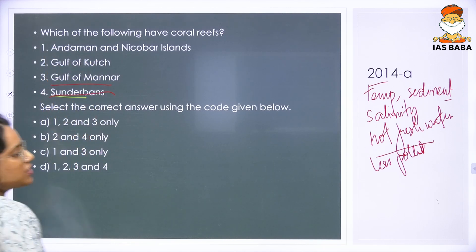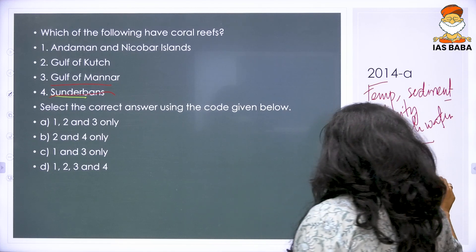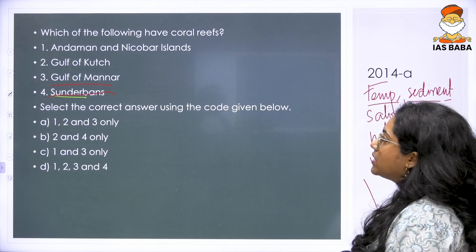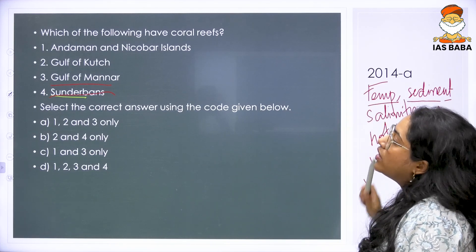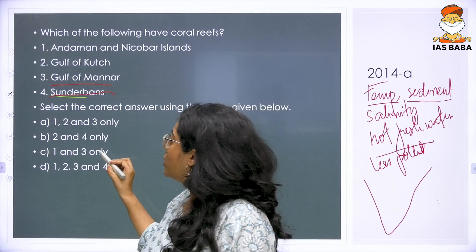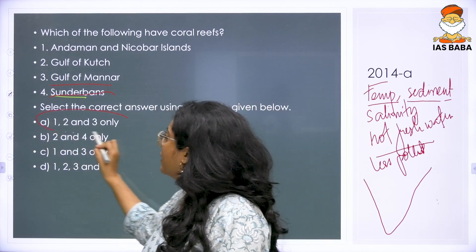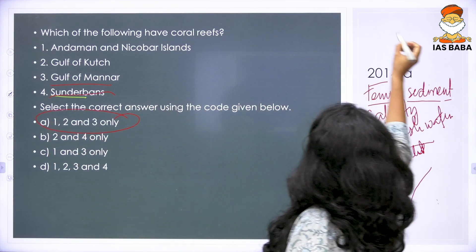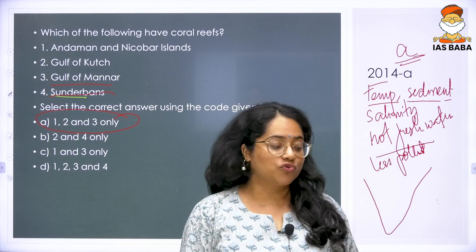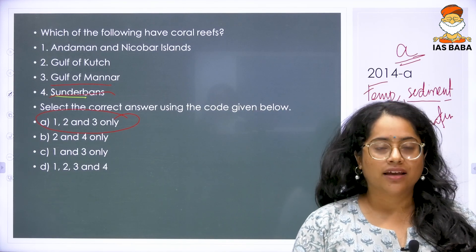In all of these areas, they all occur on the coastline. Their temperature is right and their sedimentation is right. So the answer to this question is 1, 2, and 3. The answer to this 2014 question is A.